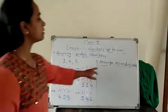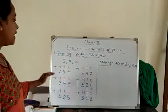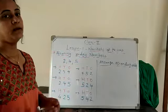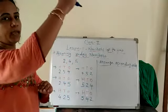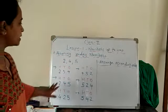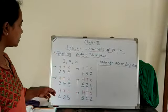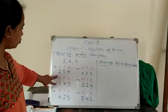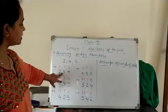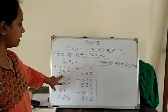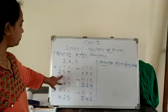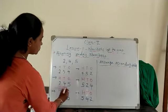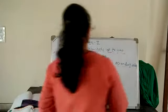Now these 6 numbers, arrange in ascending order. Ye 6 numbers ko hum ascending order mein arrange karenge. Ascending order means smaller to bigger number. So in these 6 numbers, which has the smallest? See the 100s place first — 2 is the smallest. Now compare the 10s place: 5 and 4. Which is smallest? 4. So our smallest first number is 245.